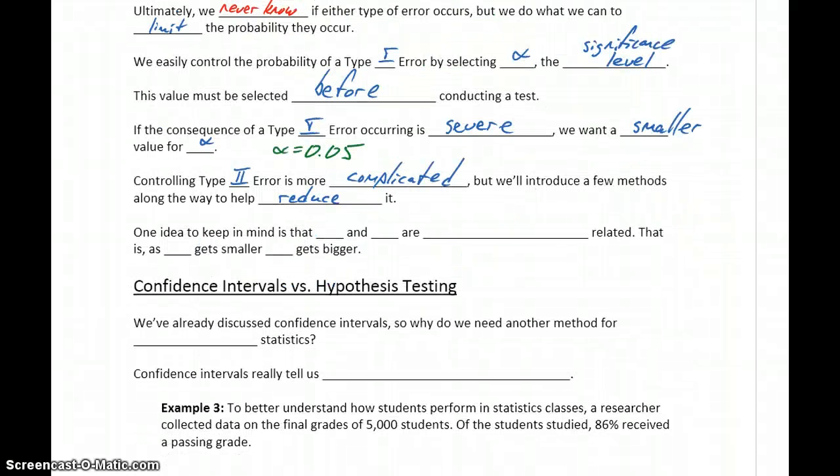One idea to keep in mind with these two different types of error is that alpha and beta, our probability of a Type I and Type II error, are inversely related. That means as alpha gets smaller, our value for beta gets bigger.